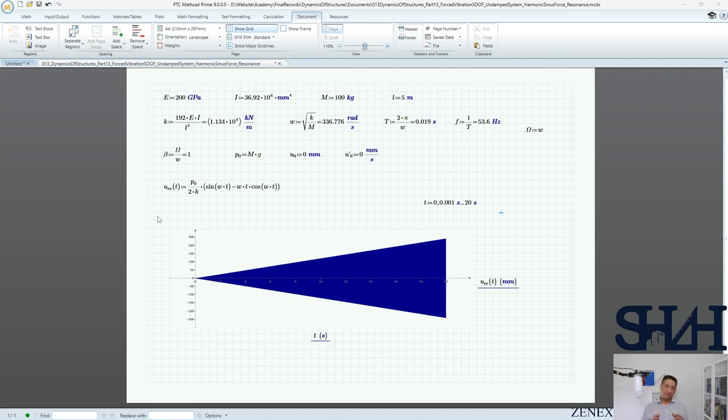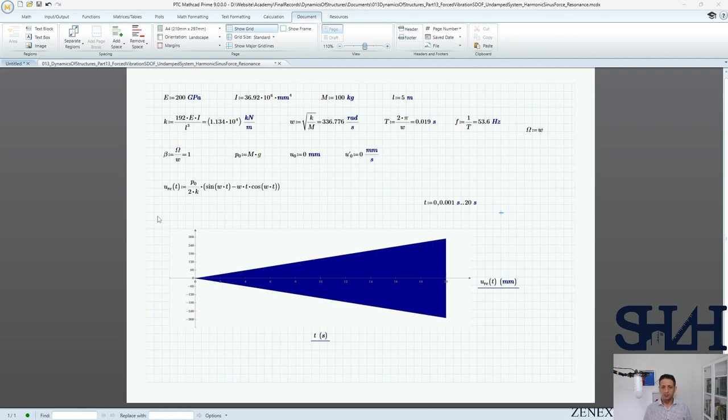Or if you have ductile material like steel, as far as the deformation is going to constantly increase, then the material would reach to its yielding point. And after that the stiffness of the structure would drop dramatically. Hence this value of beta, which is the ratio between harmonic load frequency divided by natural frequency of the structure, is very important in engineering.